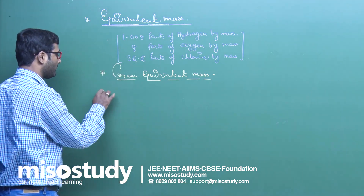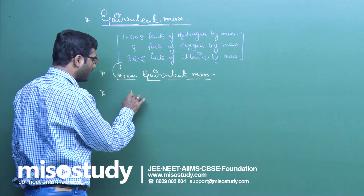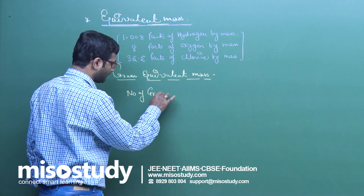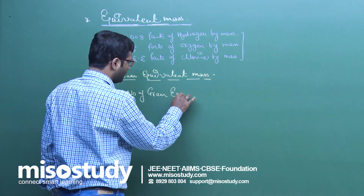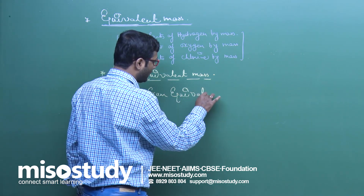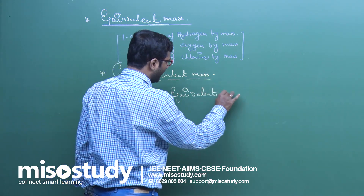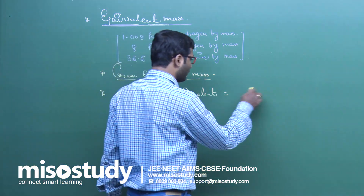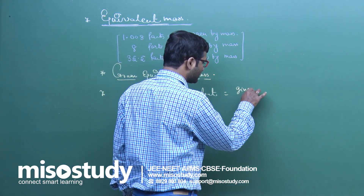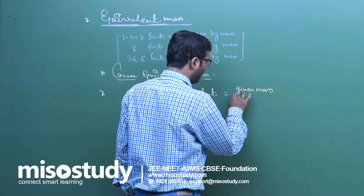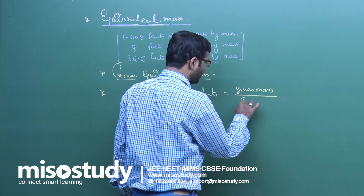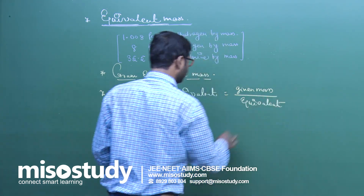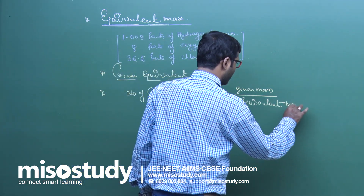The next concept is number of gram equivalents. If anyone asks you how to find the number of gram equivalents, the formula is: number of gram equivalents is equal to given mass divided by equivalent mass.